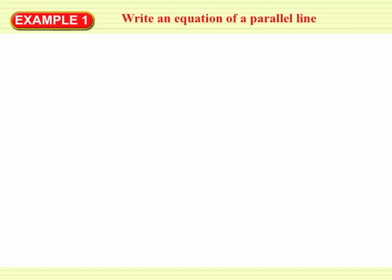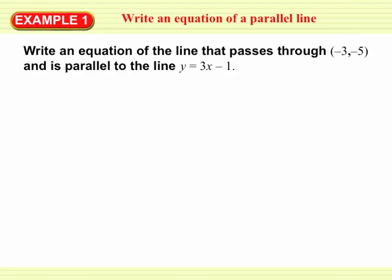So if I ask you to write an equation of a line that is parallel to a different line, a problem might look like this: write an equation of the line that passes through the point negative 3 comma negative 5, and is parallel to a second line. The second line is y equals 3x minus 1. You would plot the point and draw a line through it that's parallel to the given line.